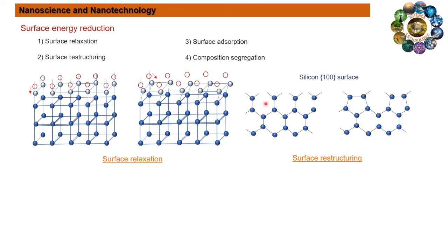For example, if a surface atom has more than one broken bond, surface restructuring is a possible mechanism to reduce the surface energy. The broken bonds from neighboring surface atoms combine to form a highly strained bond. The surface restructuring can be found in the 100 surface of silicon crystals. In this way, the surface energy is reduced through surface restructuring.